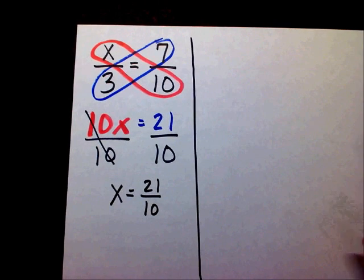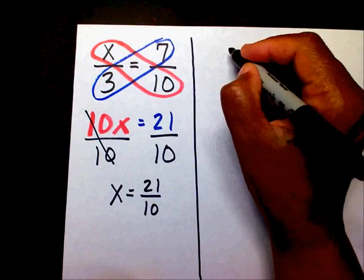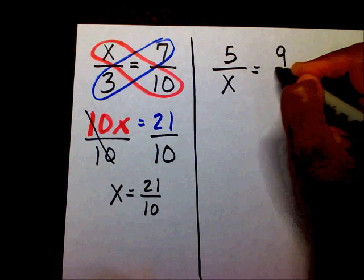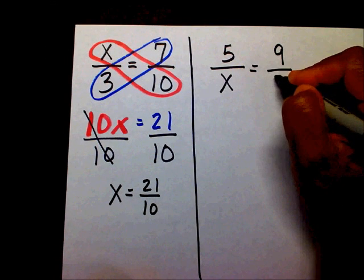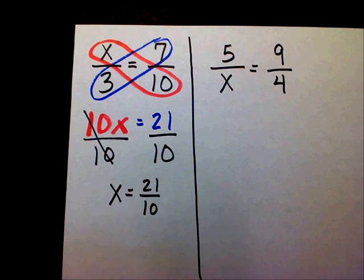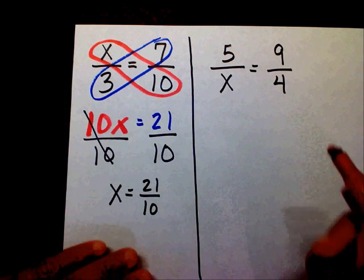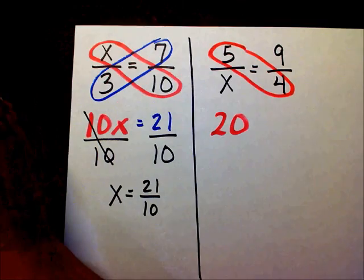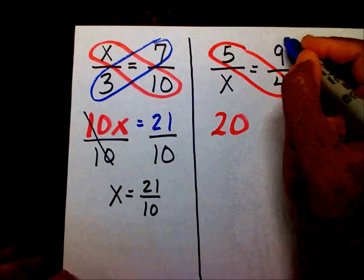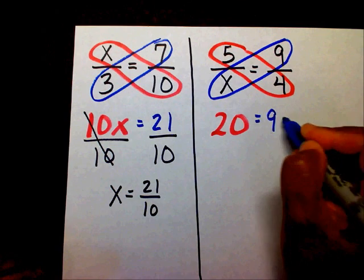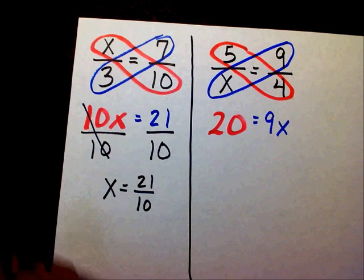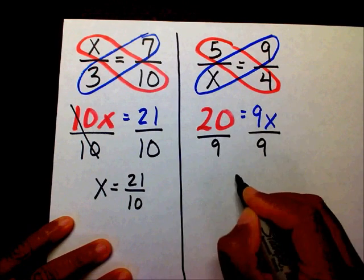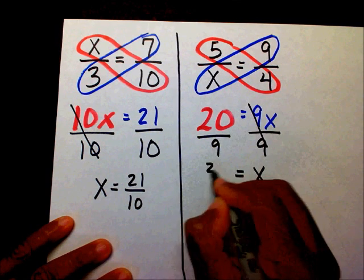What if I put 5 over x equals 9 over 4? Same method: 5 times 4 is 20, and 9 times x is 9x. Divide both sides by 9 — they cancel — so x equals 20 over 9.